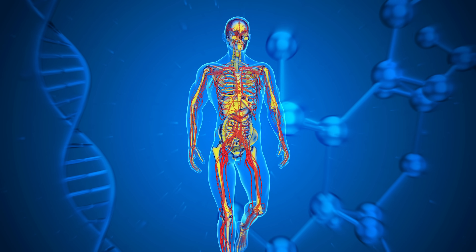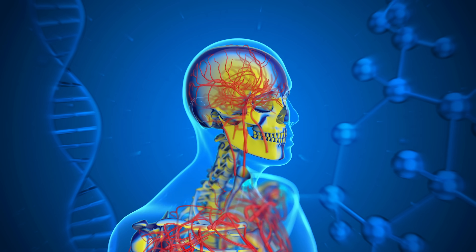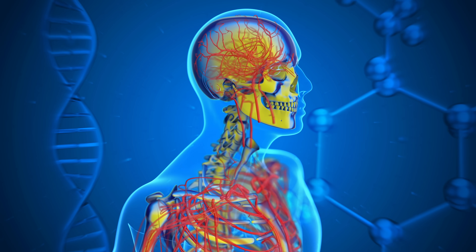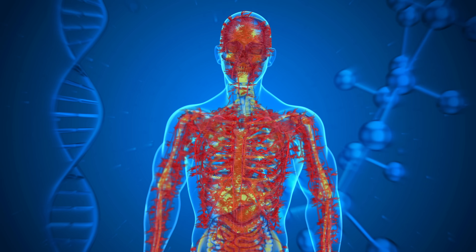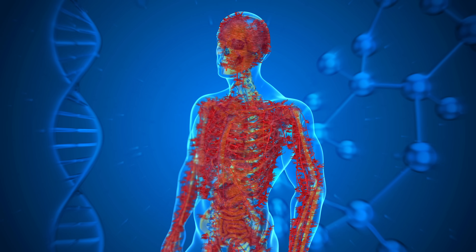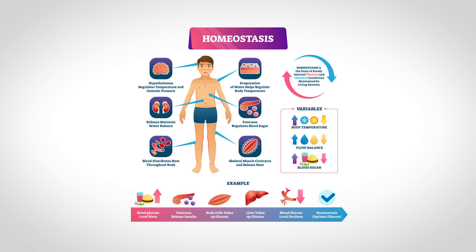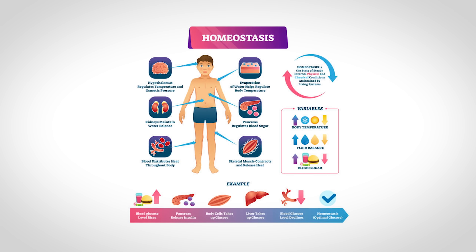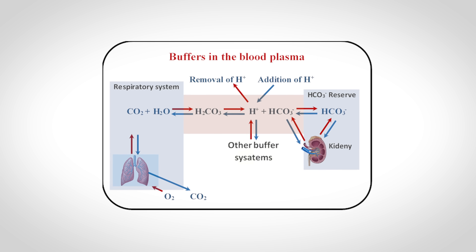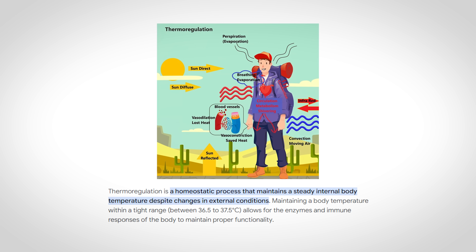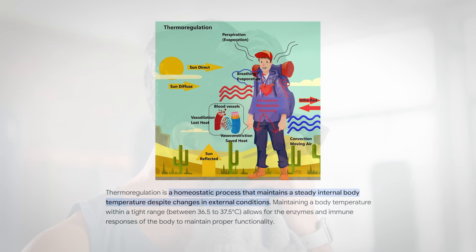Blood is essentially the transport medium for the most incredible and efficient irrigation system on planet earth, which we call our cardiovascular system. But blood is also involved in regulation — it helps maintain homeostasis in body fluids, regulates pH through buffering, and is greatly involved in thermoregulation.